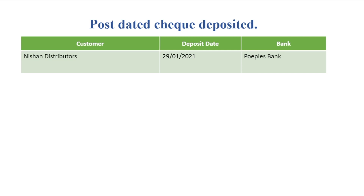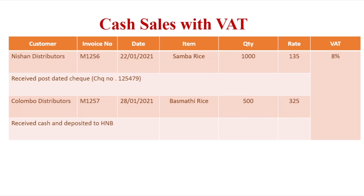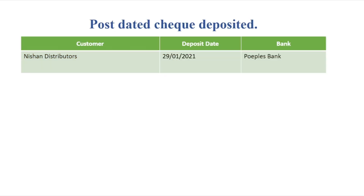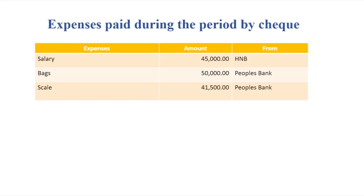This is the post-dated check. This is the cash receipt from debtors. This is the expenses paid during the period. This is the mortgage and the cash flows.